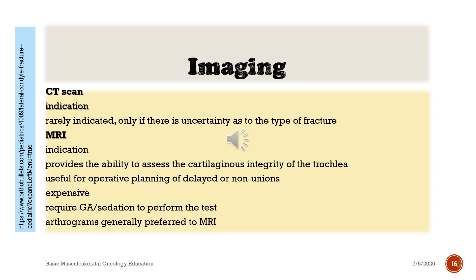CT scan — Indication: rarely indicated; only if there is uncertainty as to the type of fracture. MRI — Indication: provides the ability to assess the cartilaginous integrity of the trochlea; useful for operative planning of delayed or non-unions. Limitations: expensive and requires general anesthesia or sedation. Arthrograms are generally preferred to MRI.